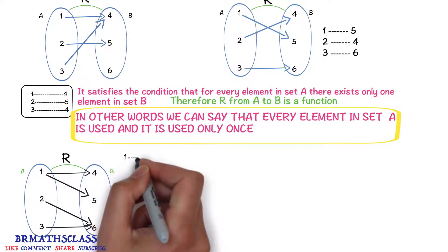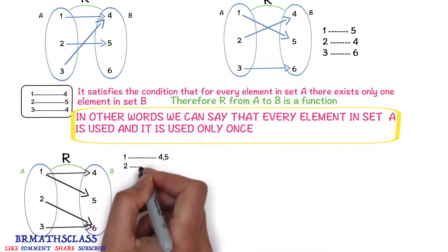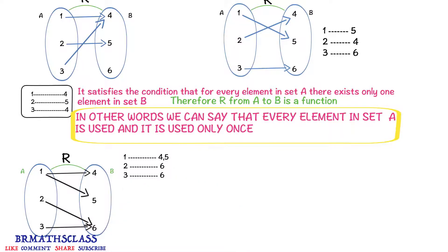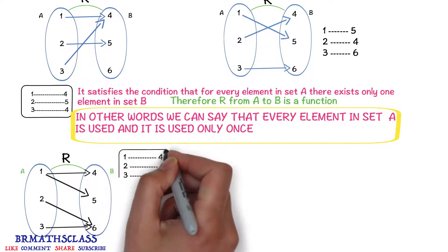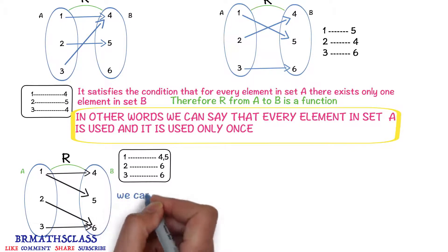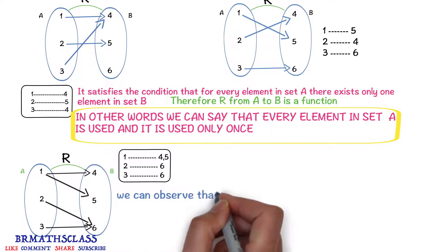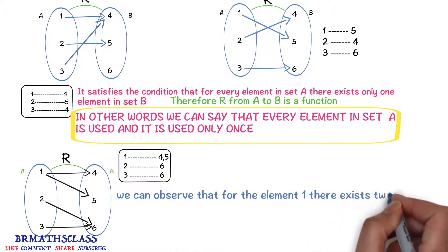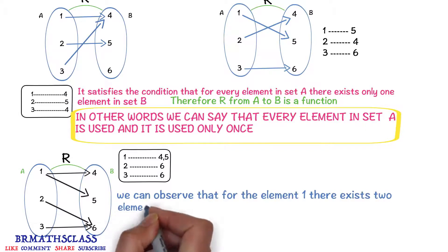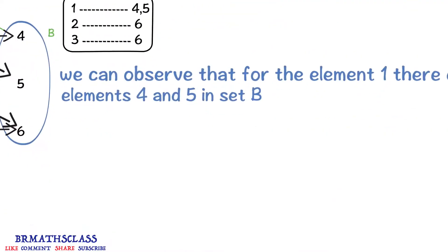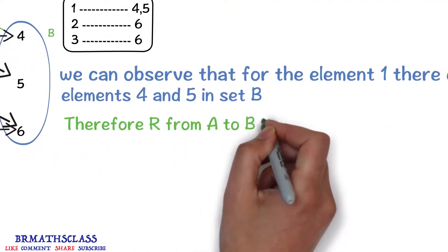Observe that for the element 1, there exist 2 elements in set b. For element 2, there exists only one element. For element 3, there exists only one element, 6. For the element 1 in set a, there exist 2 elements — 4 and 5 — in set b. So uniqueness fails. Therefore, r from a to b is not a function.